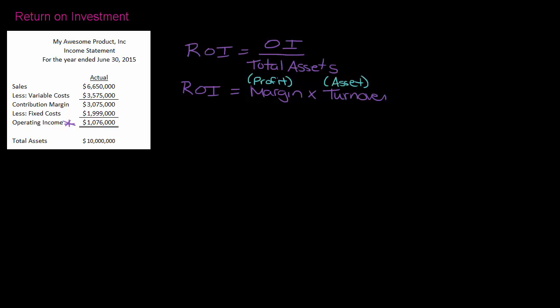That confuses some students because there are so many different turnover ratios, so in this one you're gonna use the asset turnover ratio. So let's talk about why this works first, this margin times turnover. Profit margin is equal to operating income divided by sales, and your asset turnover is sales divided by total assets.